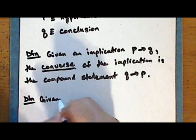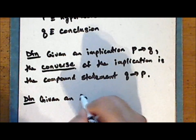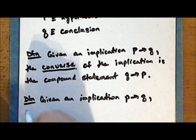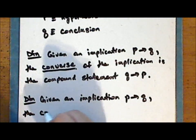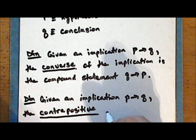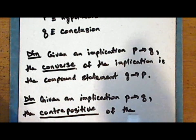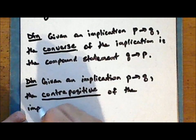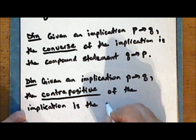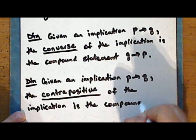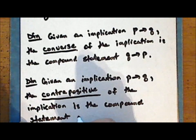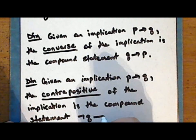Again, given an implication P implies Q, the contrapositive of the implication is the compound statement not Q implies not P.